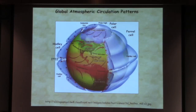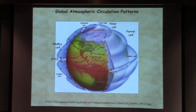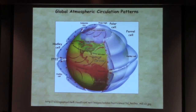Air rises at the equator — it's hot and humid. You wind up with low-pressure systems along the equator; air rises, you get a lot of precipitation. That's our intertropical convergence zone, the ITCZ. The air then flows south and north from that point, and as it does, it loses water vapor. The air becomes denser and sinks at around 30 degrees latitude — that's your desert belt.